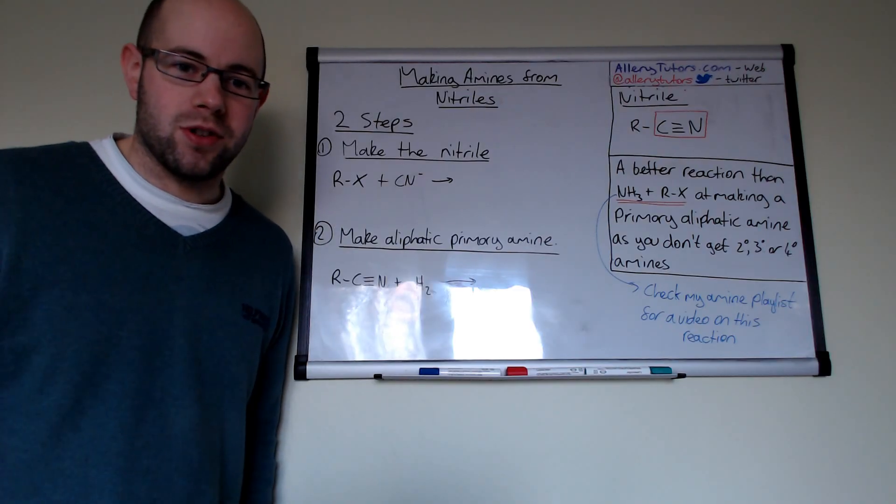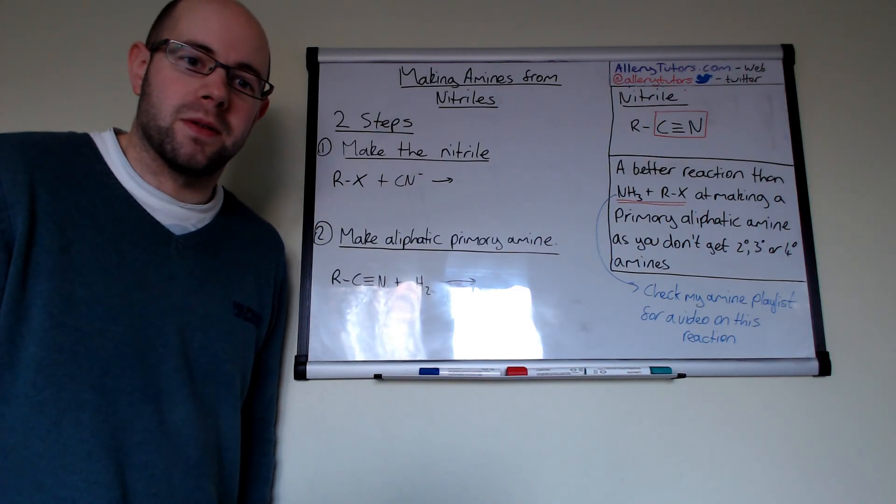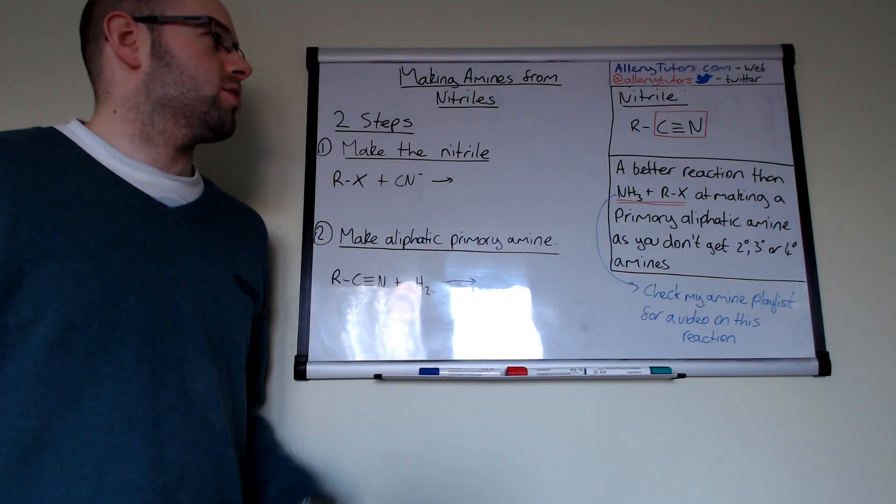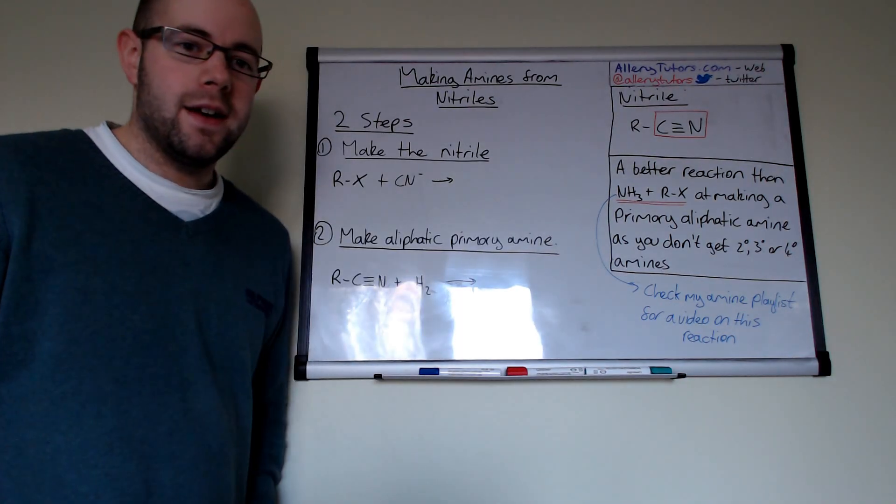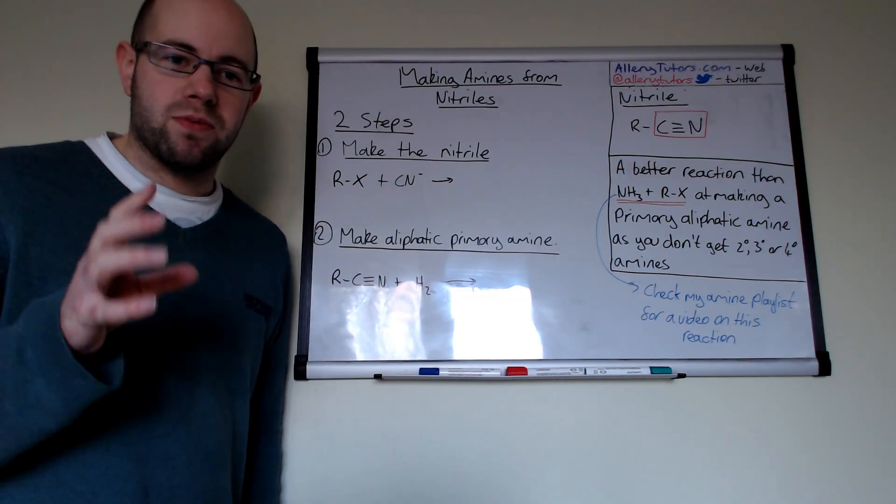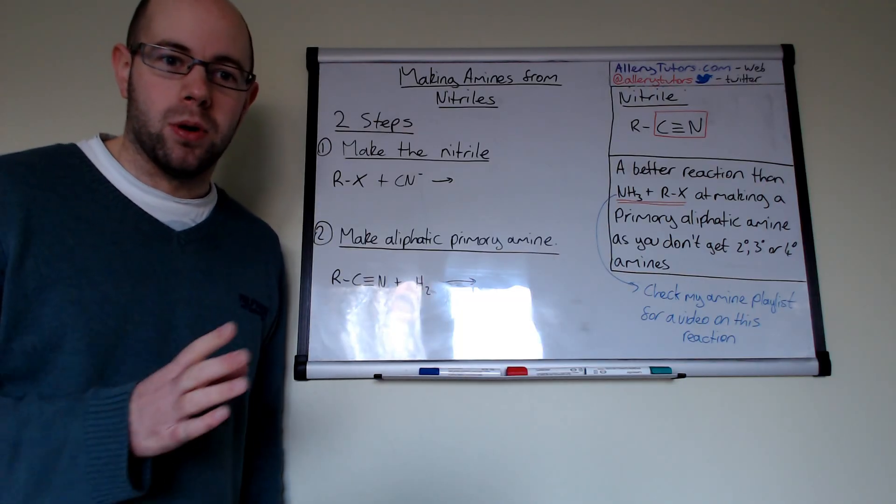Now this is just a very short video looking at another method of making amines and we're going to use the nitrile group which is RCN. It's got that triple bond in there between the carbon and the nitrogen and this reaction is actually important